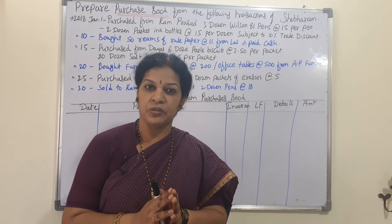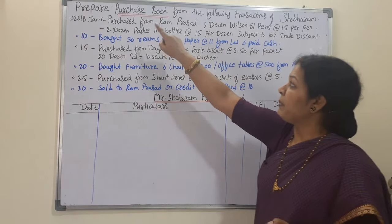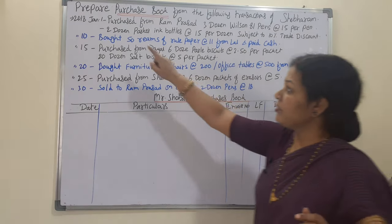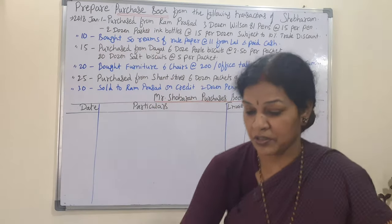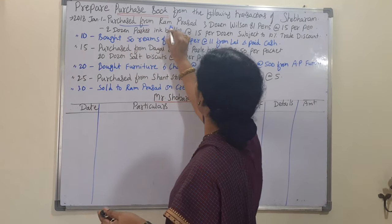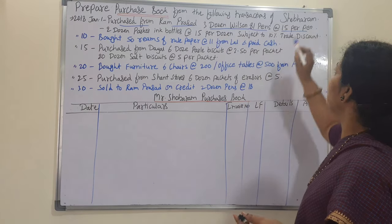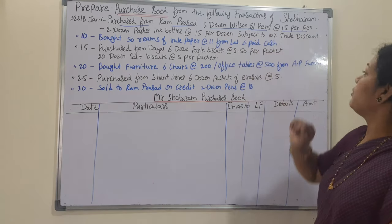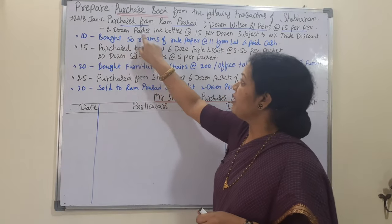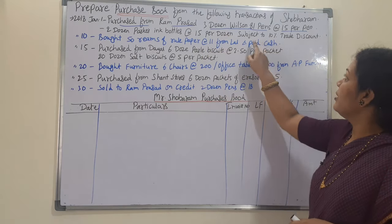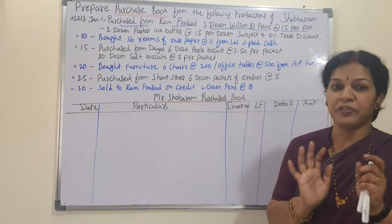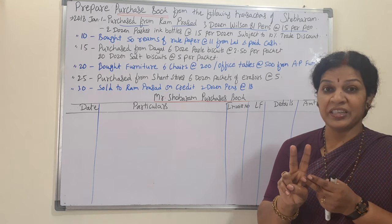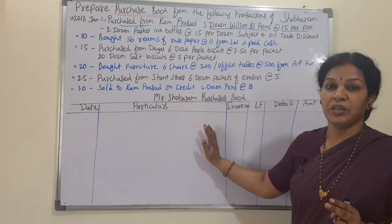Now let's get into the problem. We have to prepare the purchase book from the following transactions of Shobaram. The transactions are: 2018 January 1st — purchased from Ram Prasad three dozen Wilson 81 pens at the rate of 50 rupees per pen, and on the same date two dozen Parker ink bottles at the rate of 50 rupees per dozen, subject to 10% trade discount. Since this is a purchase of goods on credit basis, we include it in the purchase book.